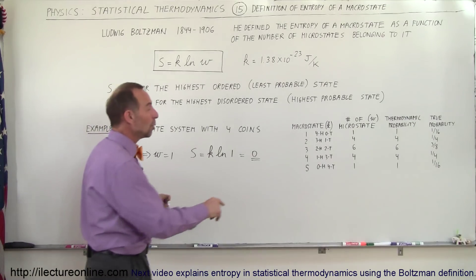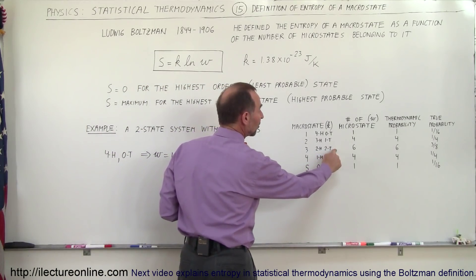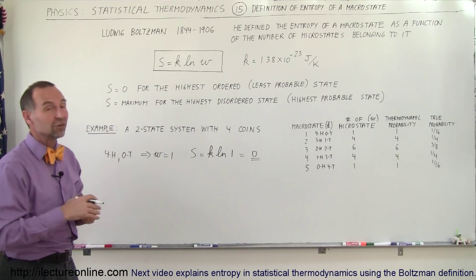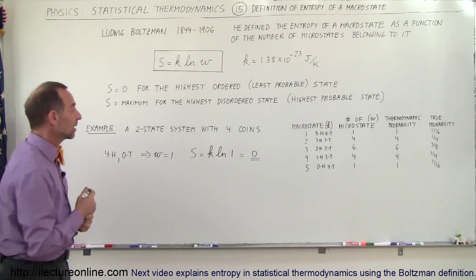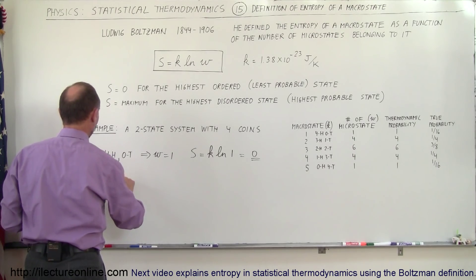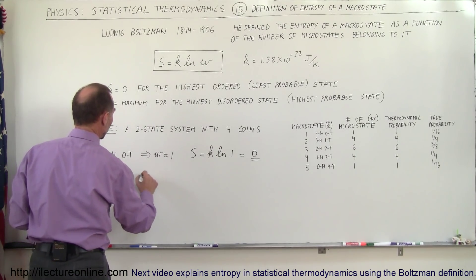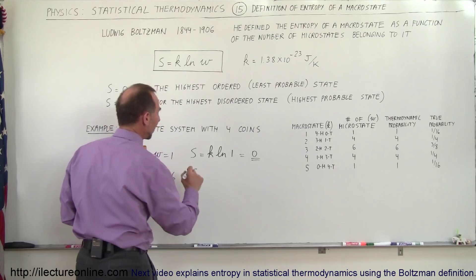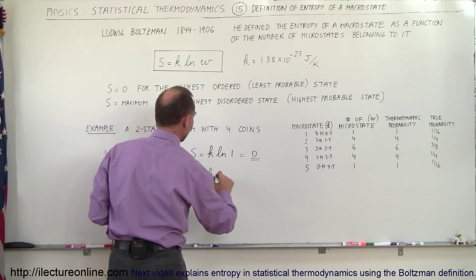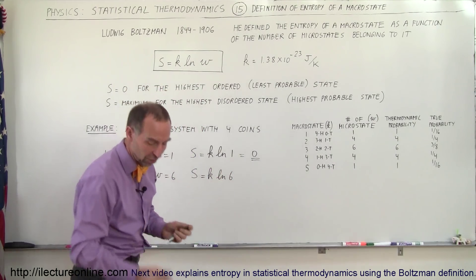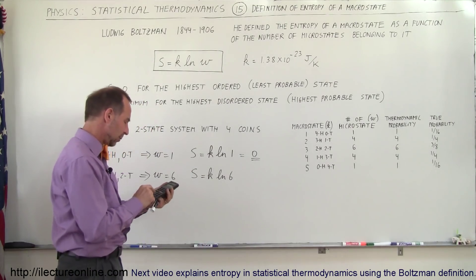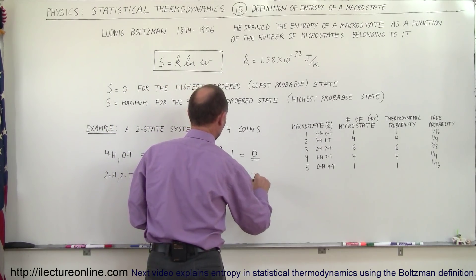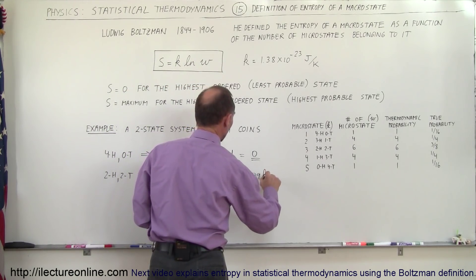Now what is the entropy when we go to the most disordered state, the most likely state to be in? So that would be macrostate three, and there's six different microstates that can exist. So therefore when we have two heads and two tails, which is the most disordered state we could be in, that means that the number of microstates is equal to six, that means the entropy for that will be equal to k times the natural log of six. Now the natural log of six is 1.79. So this would be equal to 1.79 times the Boltzmann's constant.